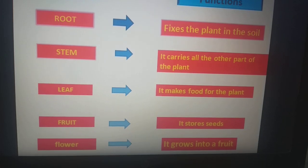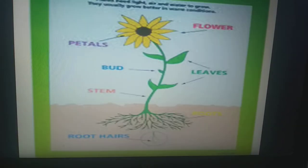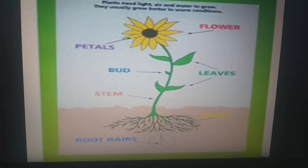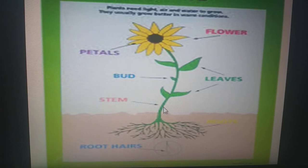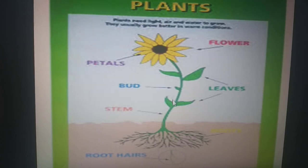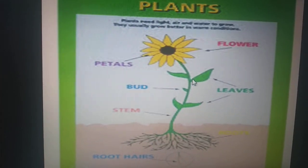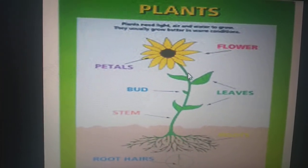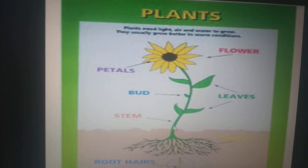Second part is stem. After root, it is very important. The green part of the plant is called stem. Look at this. The cursor is moving on the part. This green part is called stem. And it carries all the parts of the shoot.